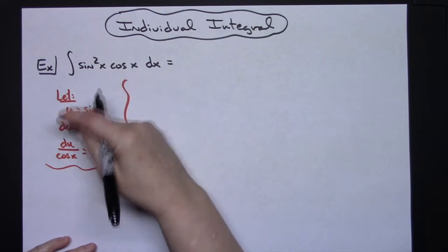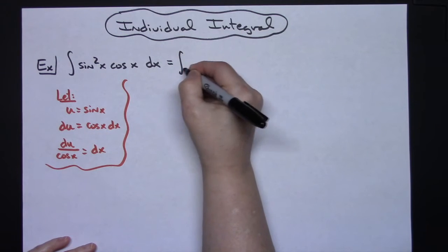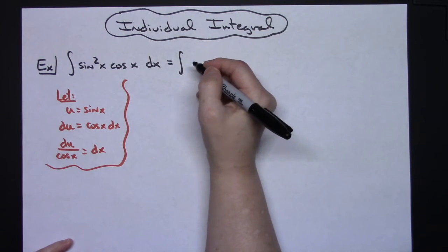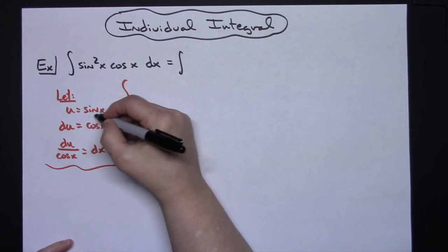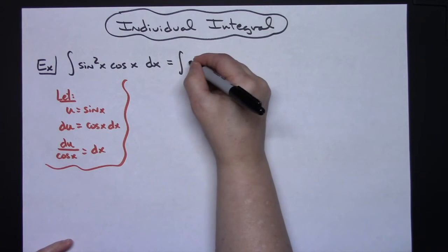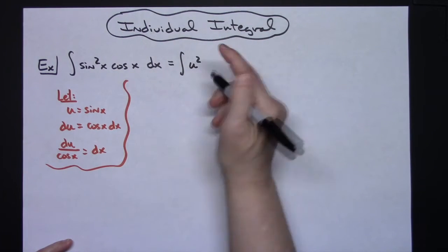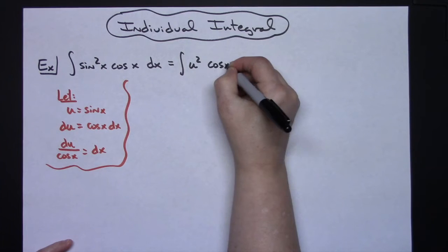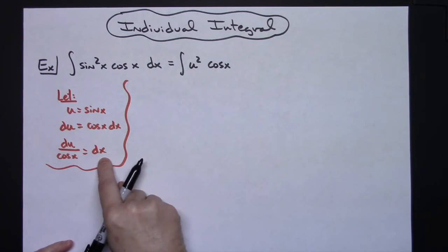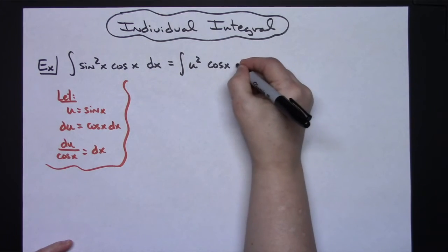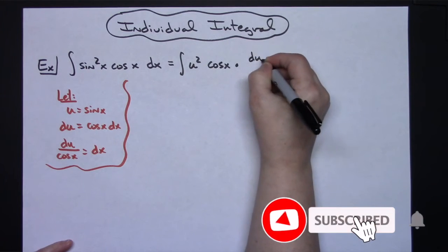Now I'm going to come back up here and start substituting. I'm going to have the integral of—I let u be sine x—so I'm going to have u squared right there. That cosine x is going to stay there. I'm going to substitute dx for du over cosine x.